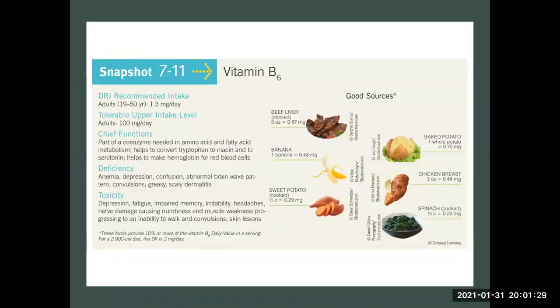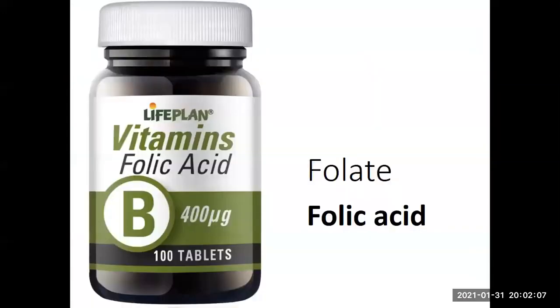Vitamin B6. As you can see, vitamin B6 is abundant in liver, banana, sweet potato, baked potato, chicken breast, and spinach. It's found in vegetables and in meats.